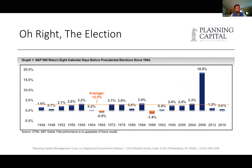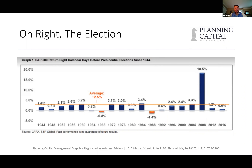Let's talk about the election. This has been coming up a lot — people asking about the election and what it means for their portfolio. This is the S&P 500 return eight calendar days before the presidential election since 1944. On average, the market is up two and a half percent in that window.